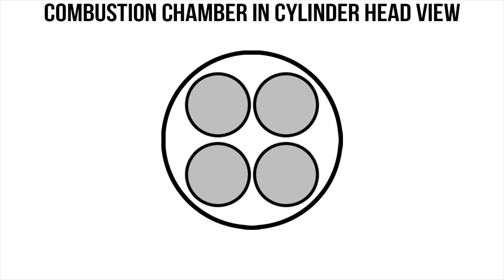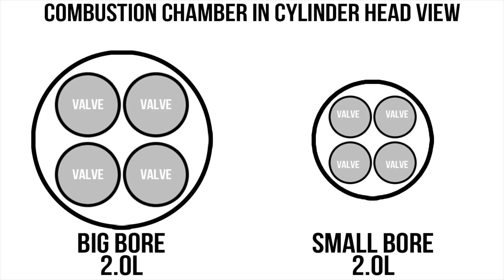Another thing to consider is how bore and stroke affect the cylinder head — specifically, how valve size is affected. Larger valves obviously flow more air overall compared to smaller valves. A 2-liter engine with a large bore has greater airflow potential in the cylinder head compared to a 2-liter with a large stroke, though this isn't always the case. It's not uncommon for an engine with really large valves to actually have worse airflow than one with smaller valves at low RPM, but at high RPM, large valves are almost always going to be better.